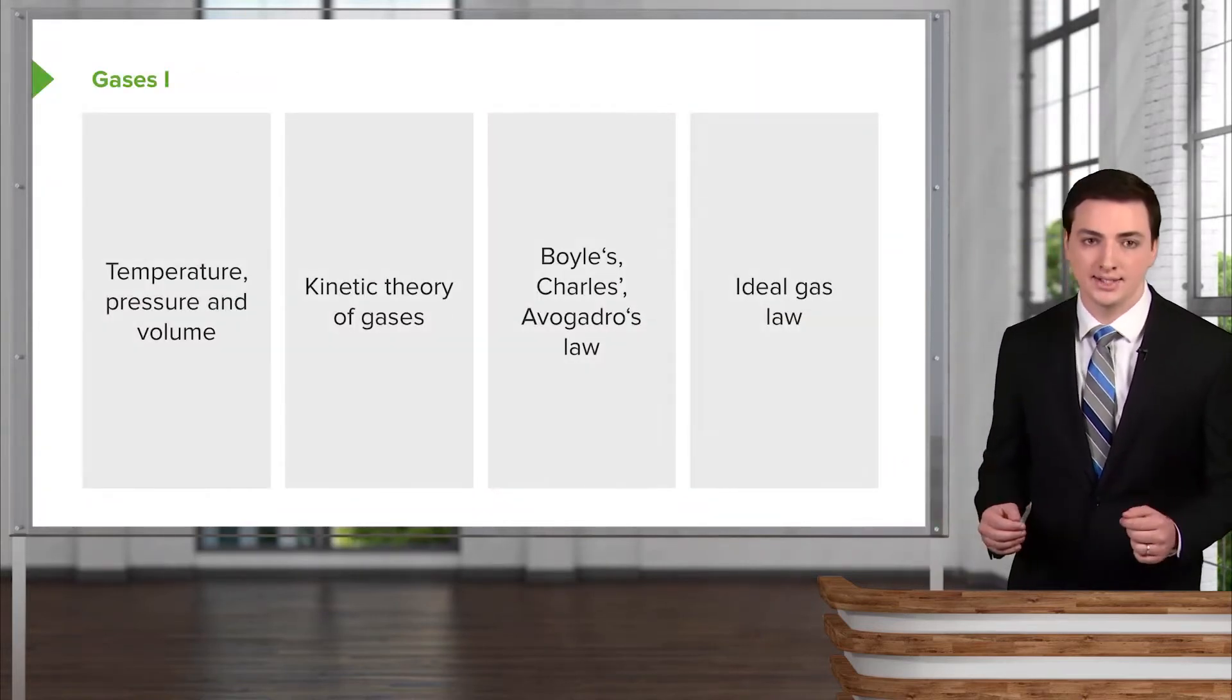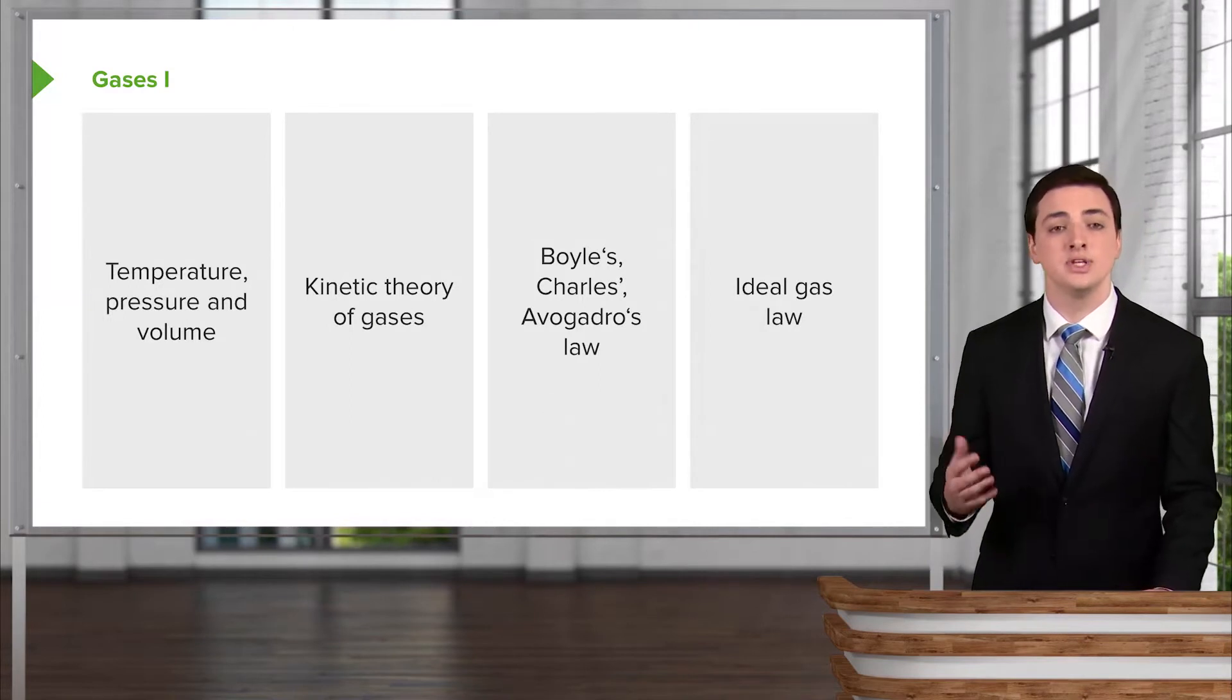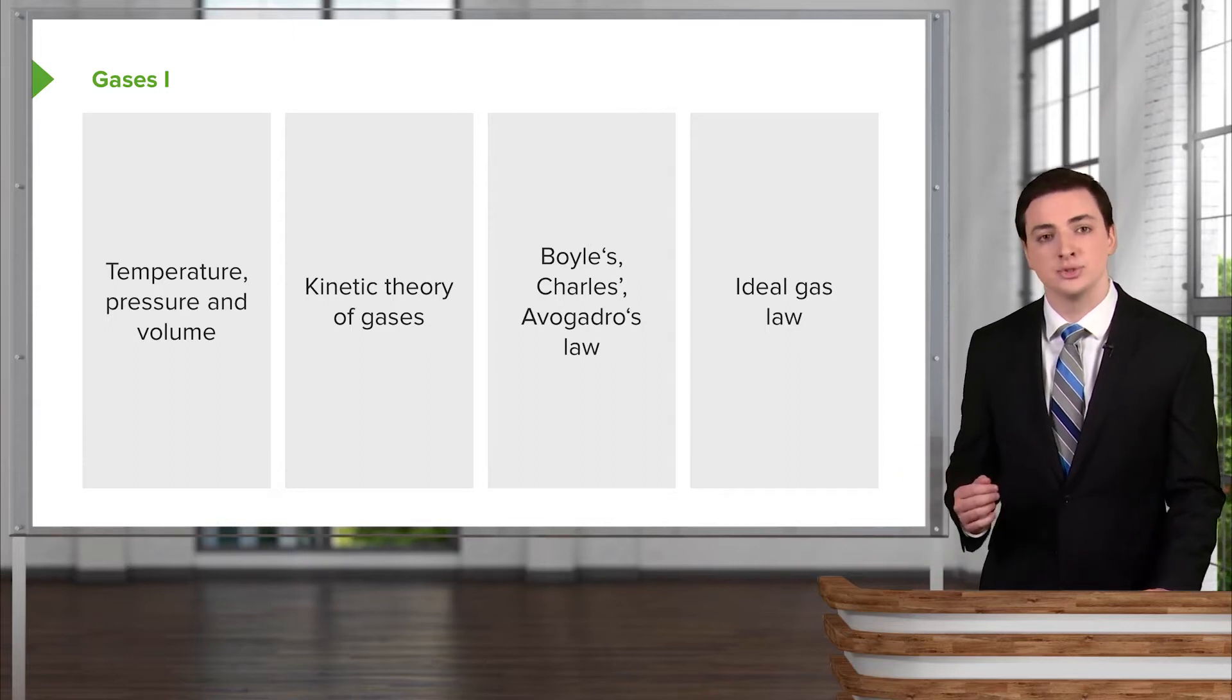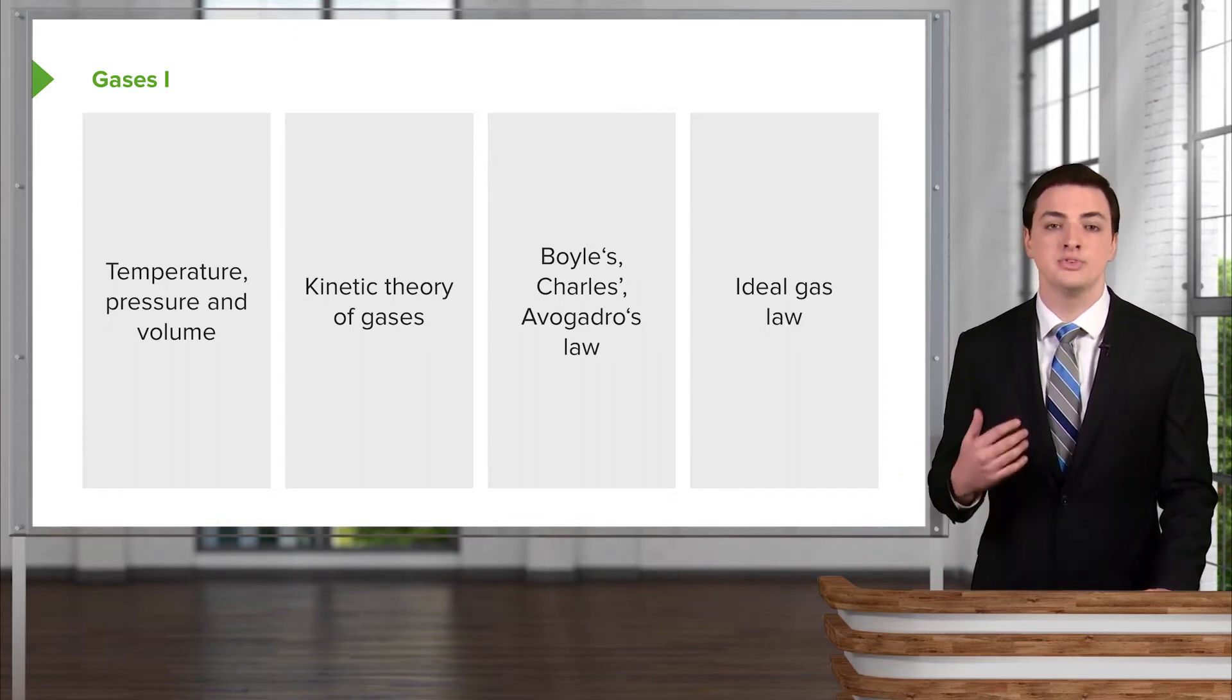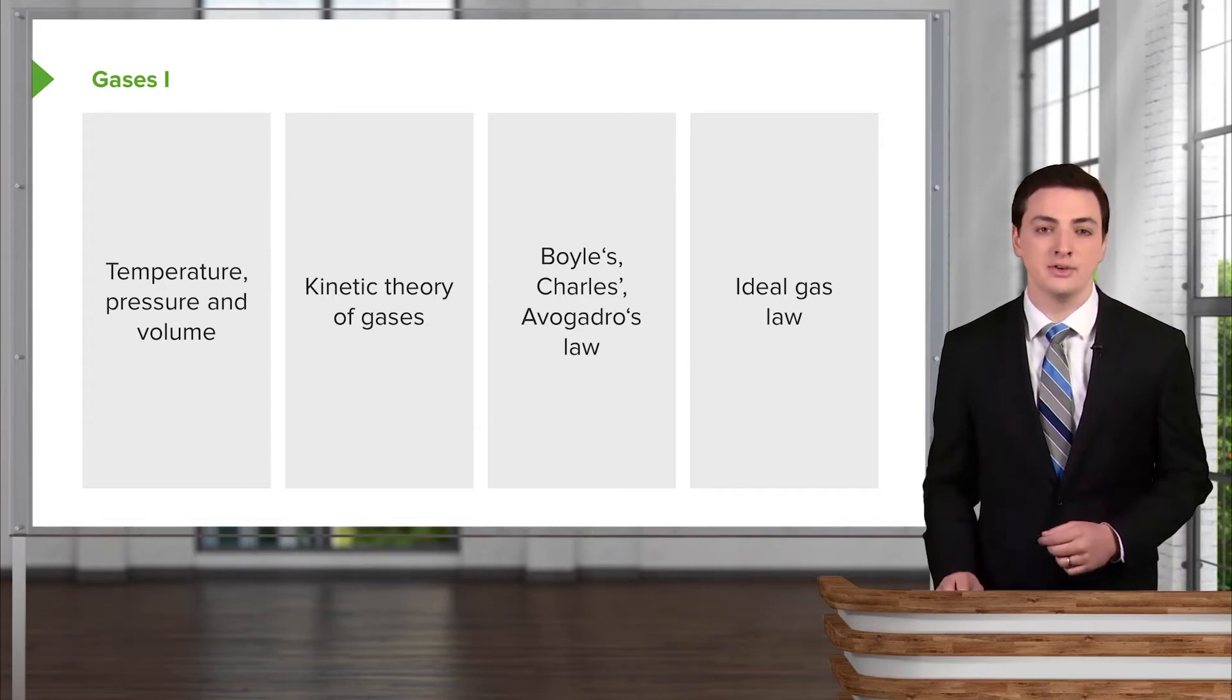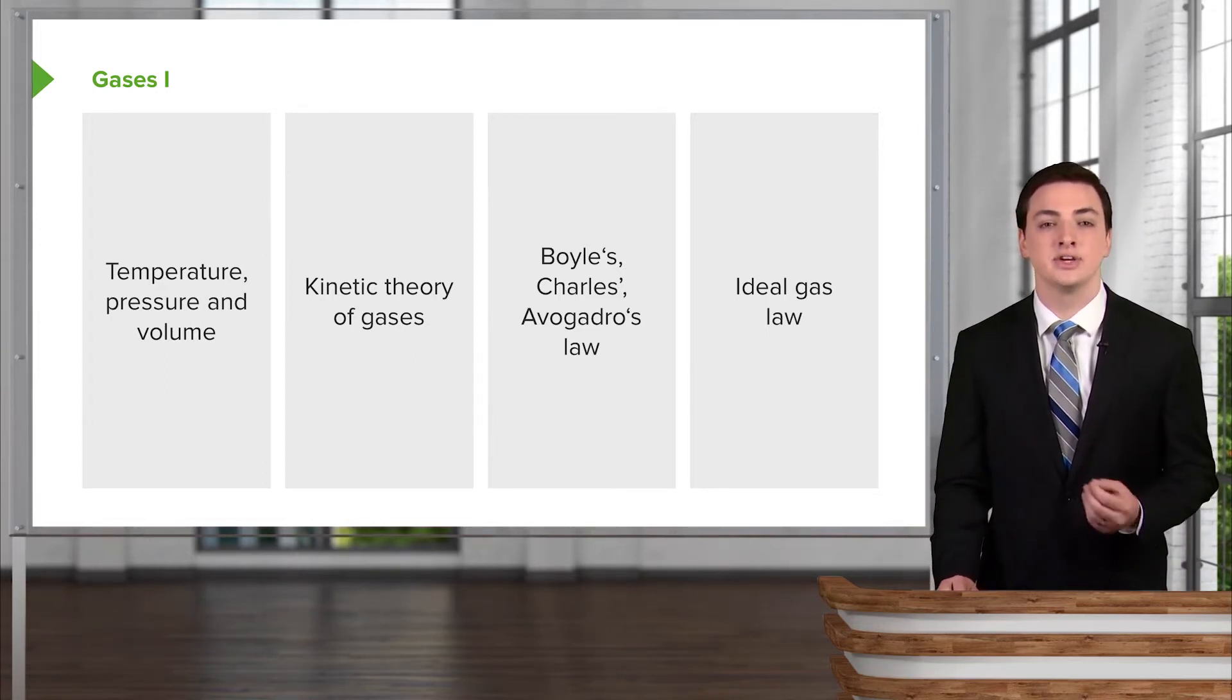We'll start with how we measure gases, especially historically, and some of the ways that we came up with the laws governing gases that we have. So we'll start with temperature, pressure, and volume. We'll then move to the kinetic theory of gases and try to develop a way of speaking about gases that is very systematic.